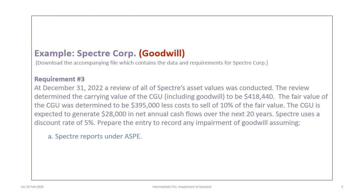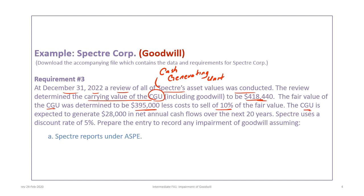Where tutorial 24a focused on the acquisition of net assets and recognition of goodwill, we now zoom to December 31st, 2022, where a review of all of Spectre's asset values was conducted. That review determined that the carrying value of the cash generating unit (CGU) including goodwill is $418,440. The fair value of the CGU was determined to be $395,000 less cost to sell of 10% of that fair value. Additionally, the CGU is expected to generate $20,000 in net annual cash flows over the next 20 years, and Spectre uses a discount rate of 5%.